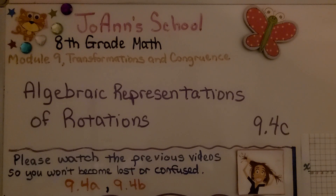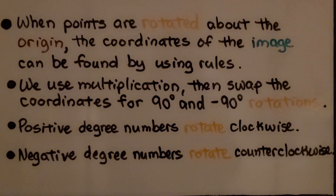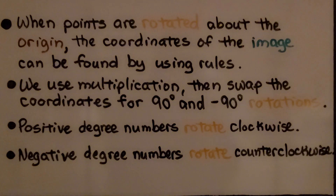Algebraic Representations of Rotations, Lesson 9.4C. When points are rotated about the origin, the coordinates of the image can be found by using rules. We use multiplication, then swap the coordinates for 90 degree and negative 90 degree rotations. Positive degree numbers rotate clockwise, and negative degree numbers rotate counterclockwise.